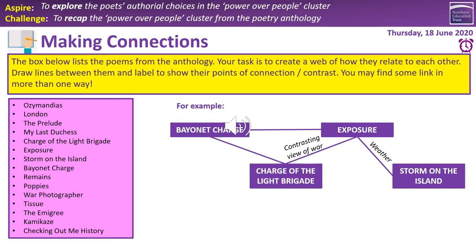Make links to other poems, writing what the link is on the line between them. Exposure has a natural link to Storm on the Island in terms of weather — the weather attacking people is an obvious motif running through both poems. There's also a clear link to The Charge of the Light Brigade in terms of contrasting views of war: honour and glory in one versus the almost futile pointlessness in Exposure. Try to fit all 15 in; using different colours for key themes may help.